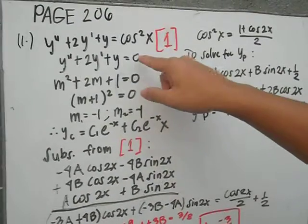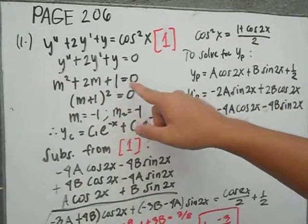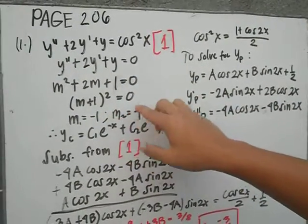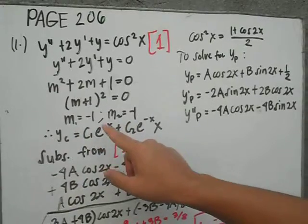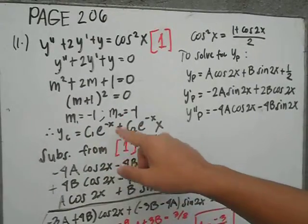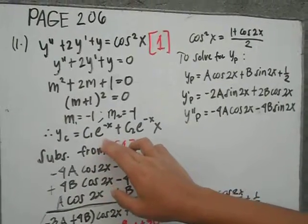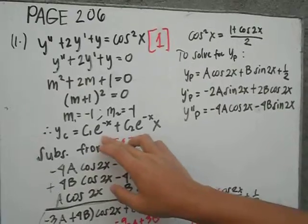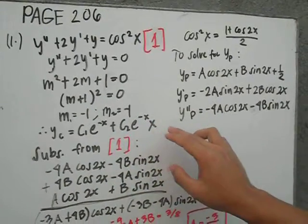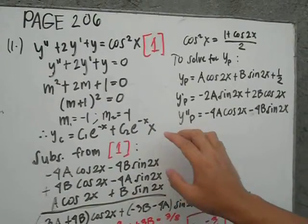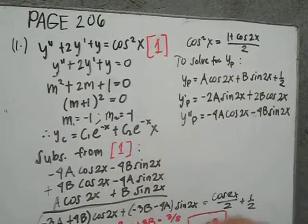Solving this equation, we get m plus 1 squared equal to 0, so m1 and m2 are both equal to negative 1. Our yc is equal to c1 e to the negative x plus c2 x e to the negative x.